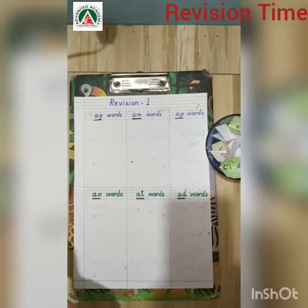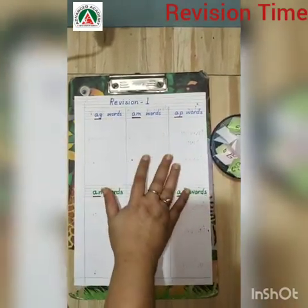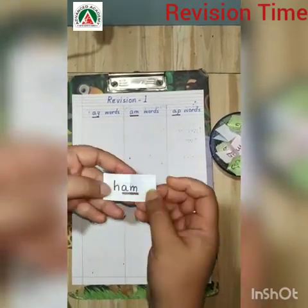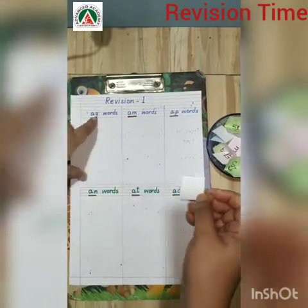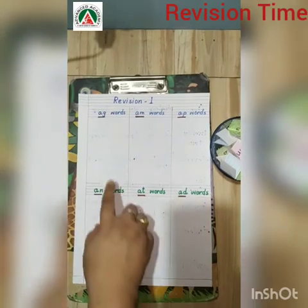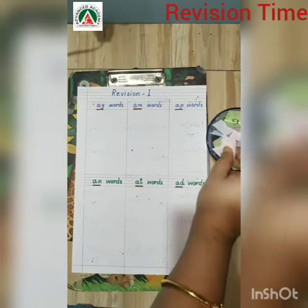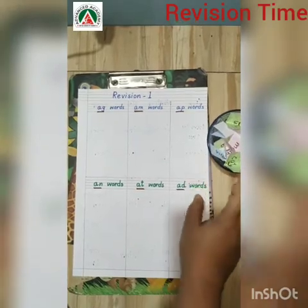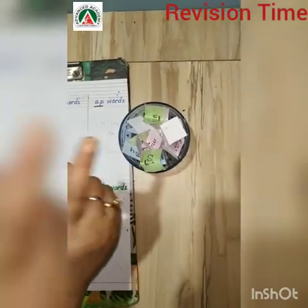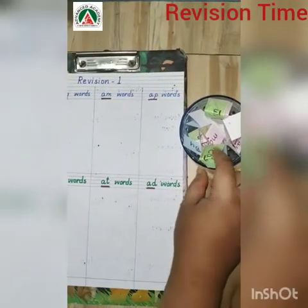The game is about all the ending words. So first, parents please make small chits of am ending words, ag ending words, ap ending words, and at and ad. These all ending words — make a chit for your children and keep it in a bowl. After this they have to pick these chits one by one from the bowl and paste them here. Let's start.